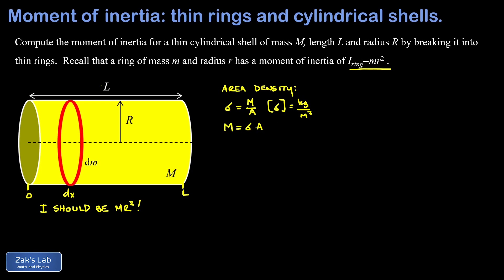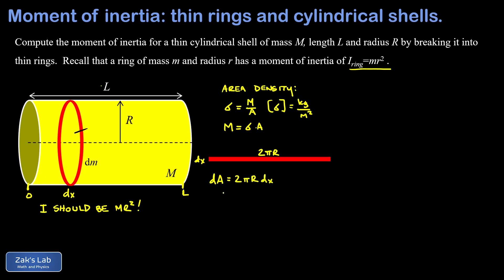To relate dm to dx, we slice this ring and unroll it into a thin rectangle. The thickness of that rectangle is dx, and the length is the same as the circumference of the ring when it was rolled up — that's 2πR. So the area of this thin rectangle, the increment dA, is 2πR·dx. That means the mass dm equals sigma times dA, which is 2π·sigma·R·dx. So we've expressed this mass increment in terms of the variable x.